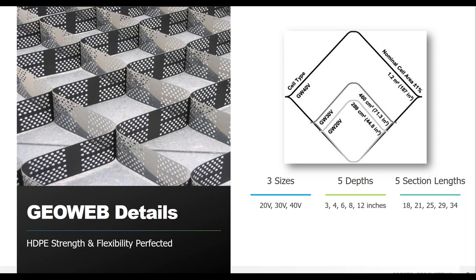The GeoWeb system consists of two main attributes. The first is the cell or container size. The cells come in three diameters - small, medium, and large openings - with cell heights of three, four, six, eight, and twelve inches. Which diameter and cell depth you pick will depend on your project-specific details, and we at Presto can help determine which is most appropriate. There are also five section lengths to best fit your project needs, so quite a bit of variability in the product.